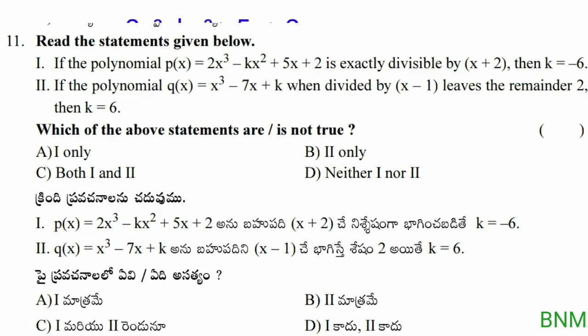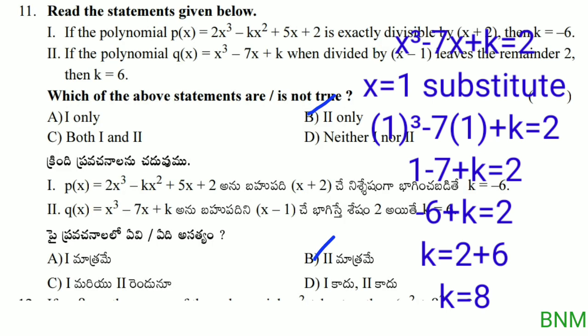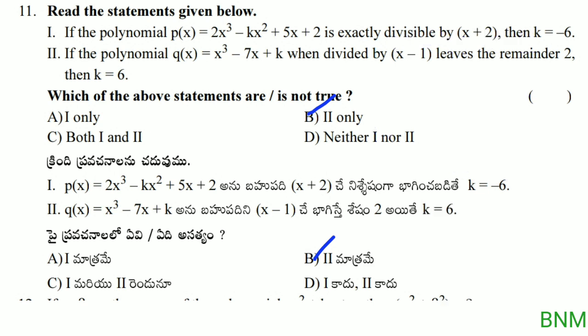The second statement: if polynomial q(x) equals x cubed minus 7x plus k, when divided by x minus 1 leaves remainder 2, then k equals? Substituting x equal to 1: 1 minus 7 plus k equals 2, so k equals 8, not 6. Therefore the second statement is wrong. So which statement is not true? The second statement is not true — that is the right answer.